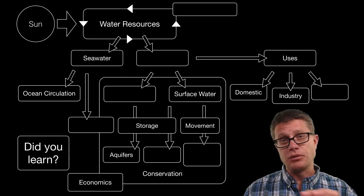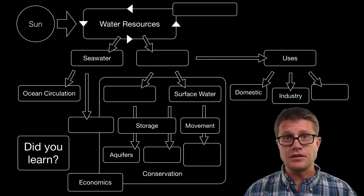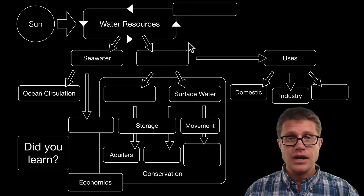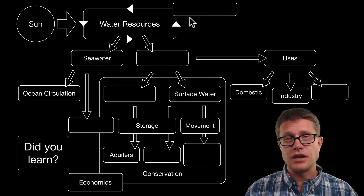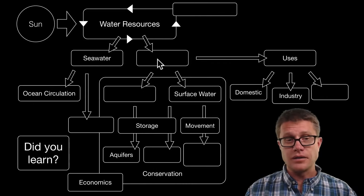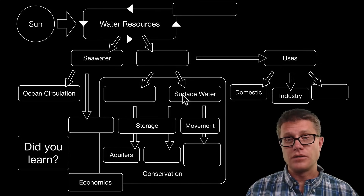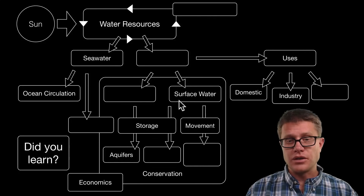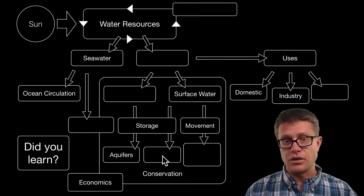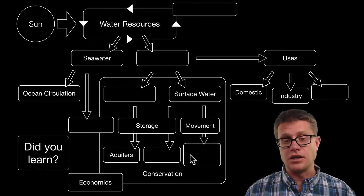Water resources move through the hydrologic cycle. We have sea water and fresh water; ocean circulation and desalination could help solve the water problem. Fresh water can be ground water or surface water. We use it for domestic, industrial, and agricultural purposes. We can store surface water through reservoirs and ground water in aquifers, and we use aqueducts and irrigation to move water around. Conservation is incredibly important, and economics are going to drive that.